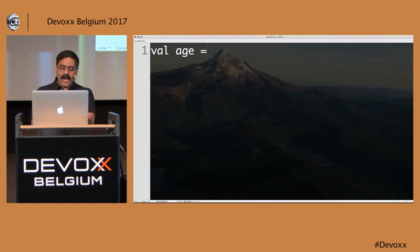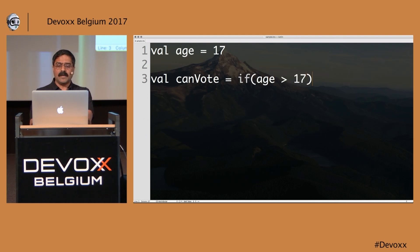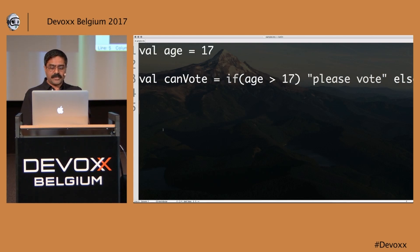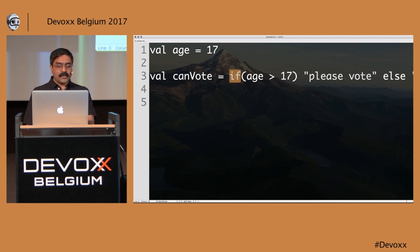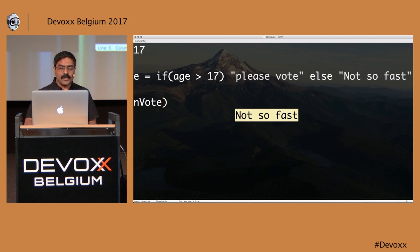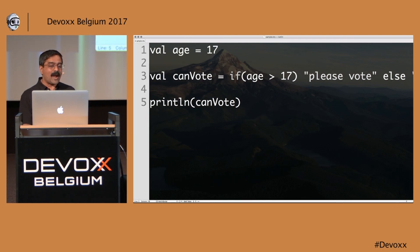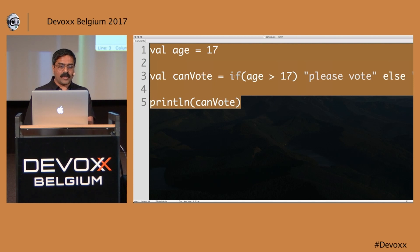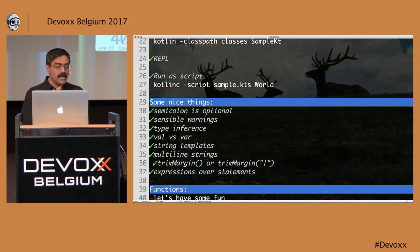Here's an example. Let's say age equals 17. I can say 'canVote = if (age > 17) "please vote" else "not so fast"'. If becomes an expression — whatever the if returns can be assigned to a variable. When I print canVote, it says 'not so fast', which is the value from the else part. Similarly, try-catch is also an expression — the last statement within a try block becomes the expression of the try itself. This removes ceremony and prevents unnecessary mutability.